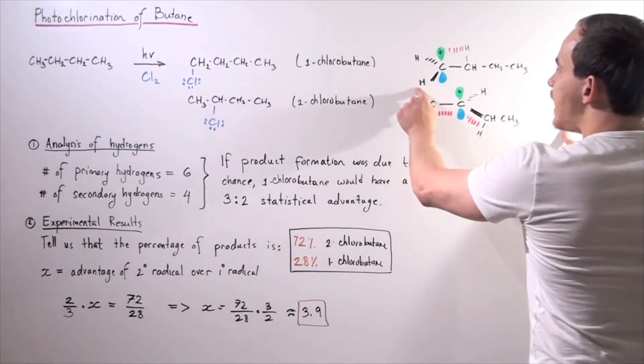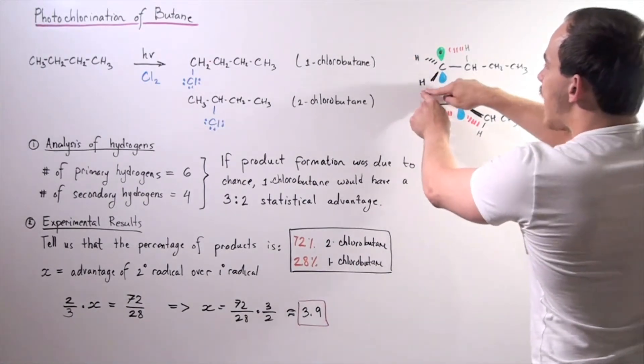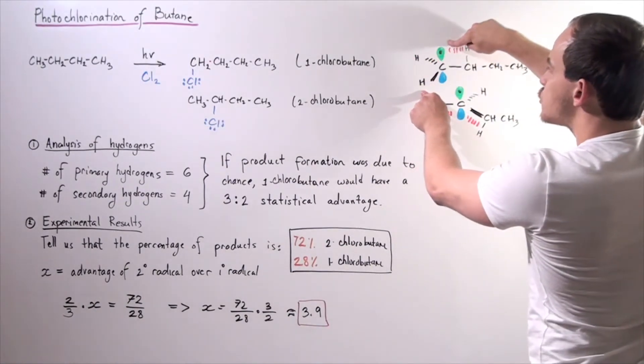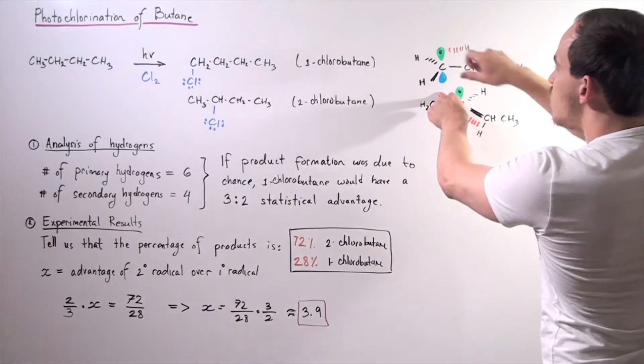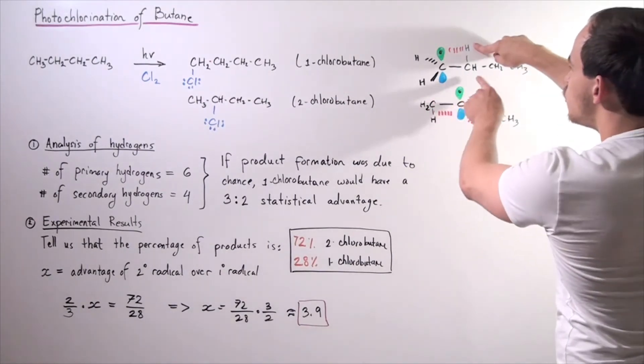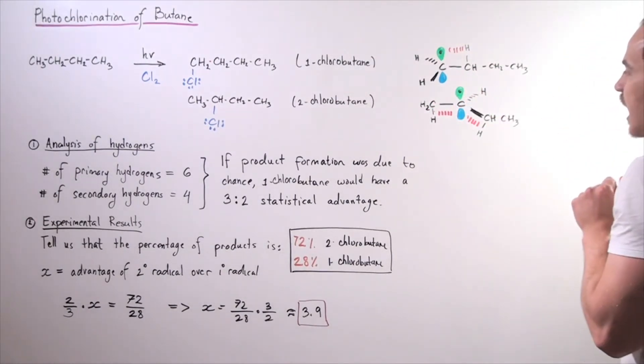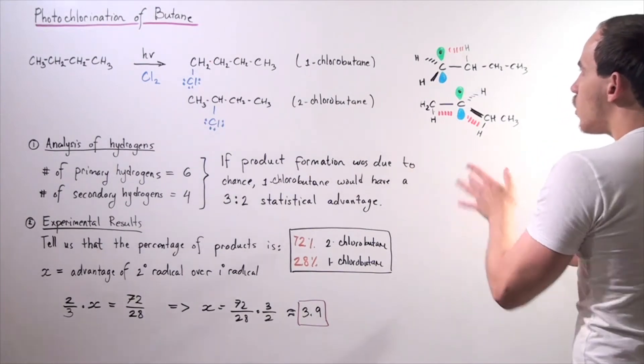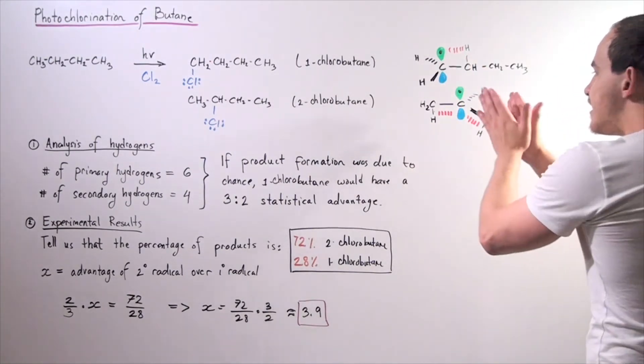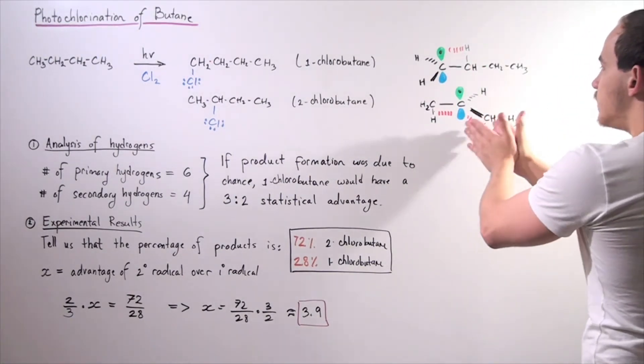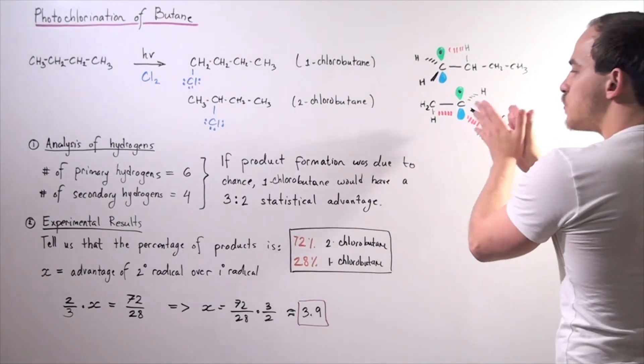Notice that we have two H atoms that cannot interact with this lobe. But this 2P orbital can interact with these two H atoms. At the same time, we have many more of these interactions in this molecule, in this radical intermediate, and so it's much more stable.